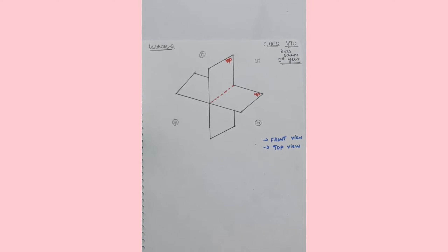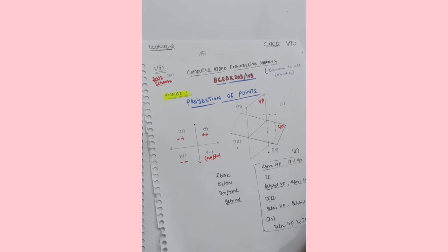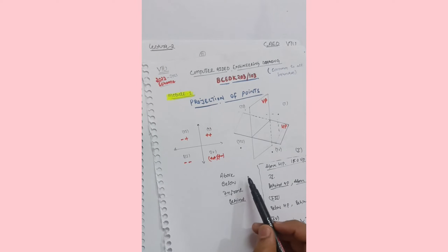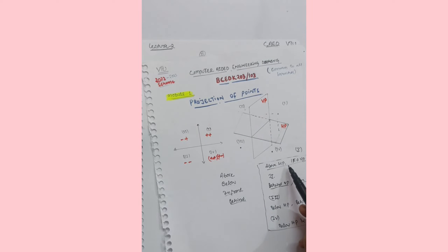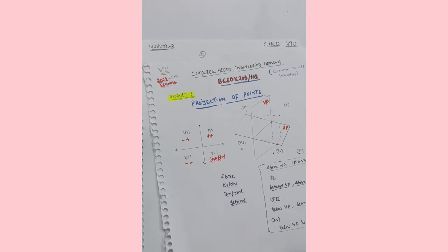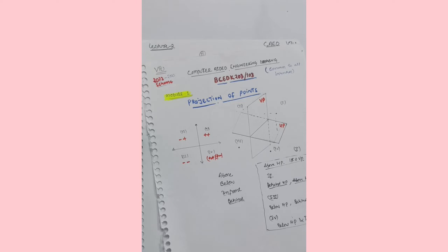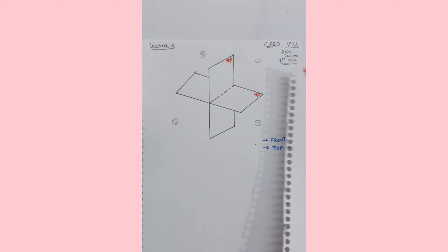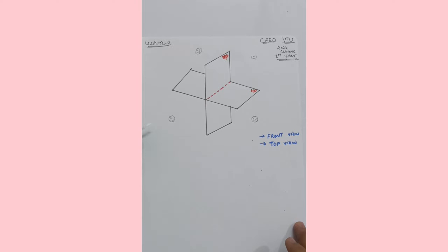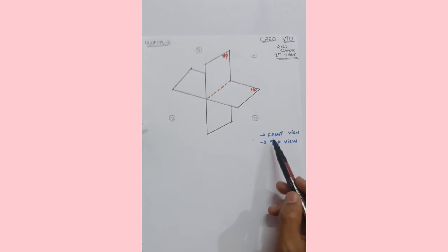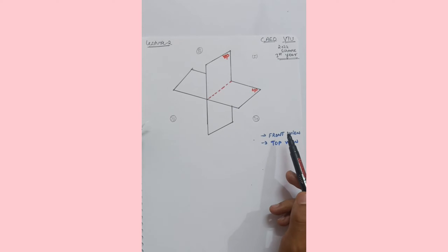Hello, my dear friends, welcome back to my channel. In the previous lecture we discussed computer-aided engineering drawing — the first module, projection of points. We covered important terminologies like above, below, in front, behind, above HP, and in front of VP. I have shared the link in the description box. This is a basic lecture, so don't miss it — see that lecture first before proceeding to this one.